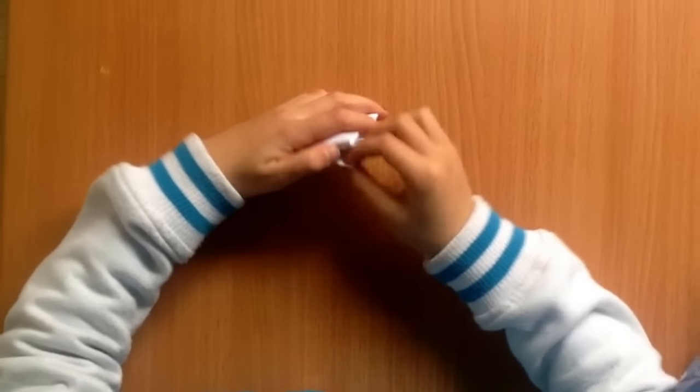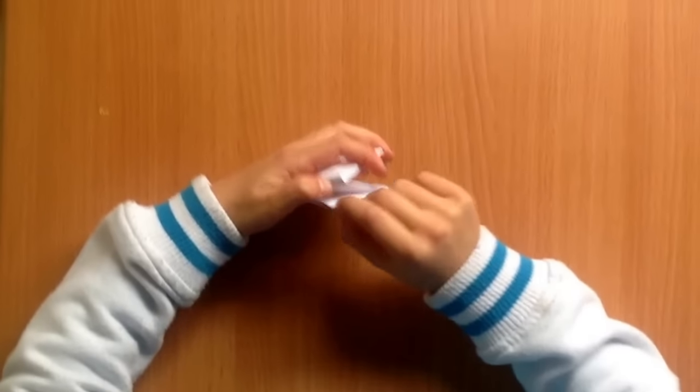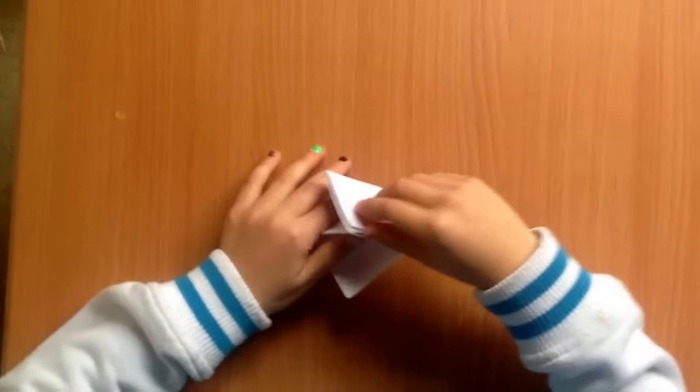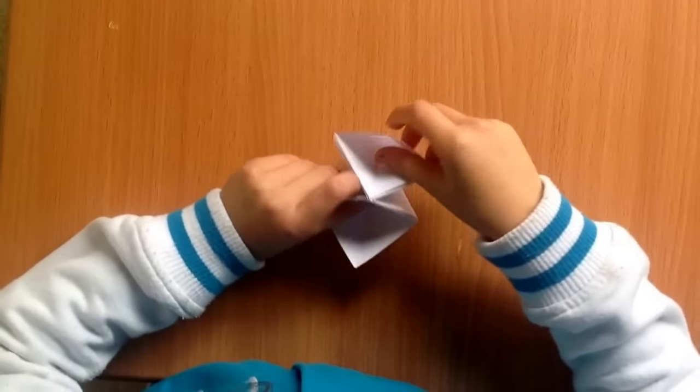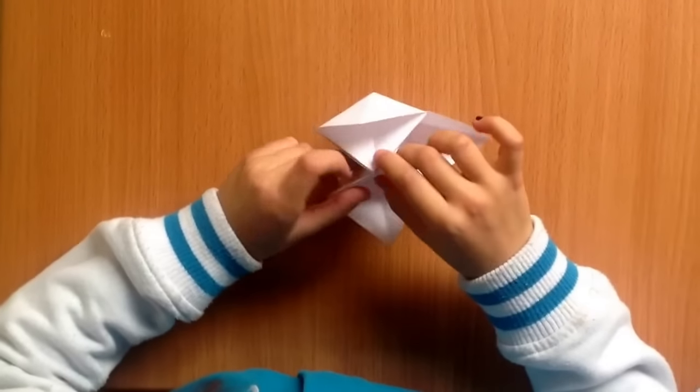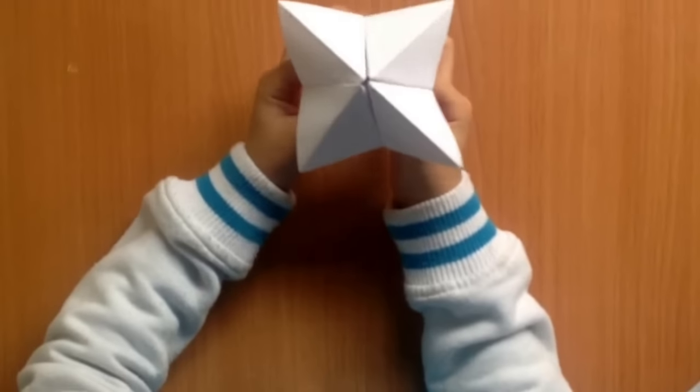At the bottom you should have a little flap here and pull that out. At the top you should as well, so pull that out as well. In the middle you should have one and on the other side. Turn it over and you've got your chatterbox.